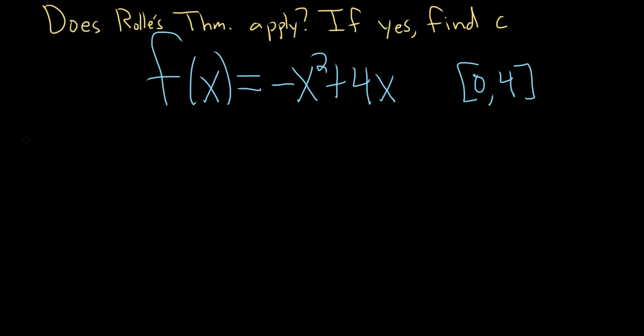The first condition of Rolle's theorem is that the function is continuous on this interval here. This is a polynomial function, it's a parabola, so it's certainly continuous. So I'll just say f is continuous on [0,4] because it's a parabola.